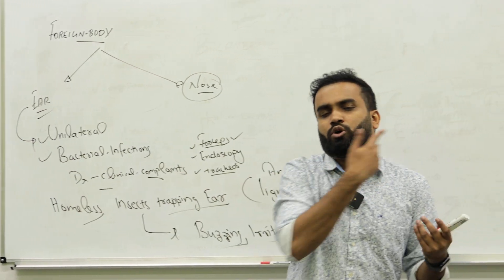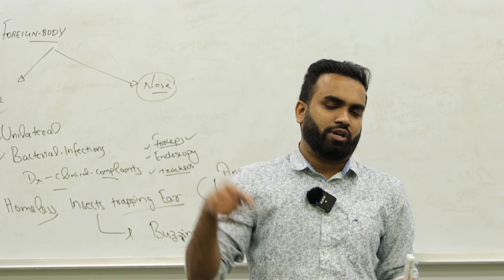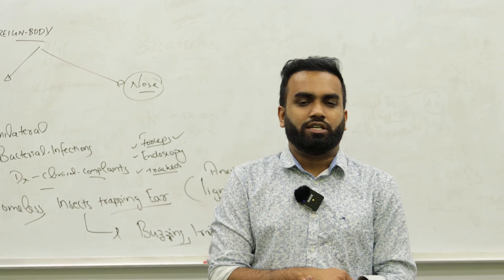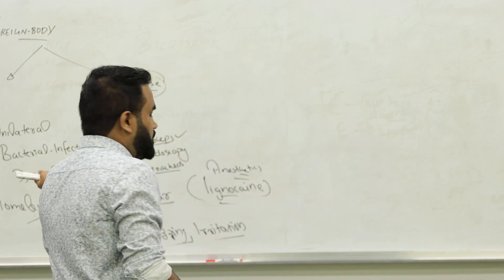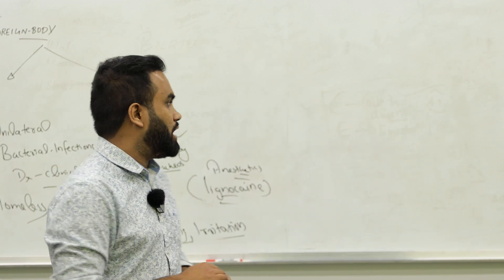Tracheoendoscopy or forceps. Like where is the foreign body you are suspecting. You will do an x-ray and you will check it. And you try to take by forceps or other instruments. It's very easy for an ENT doctor. Where an infection, you will give antibiotics like amoxicillin.